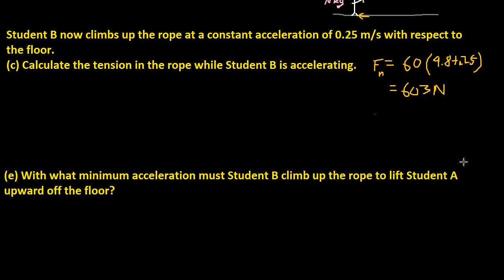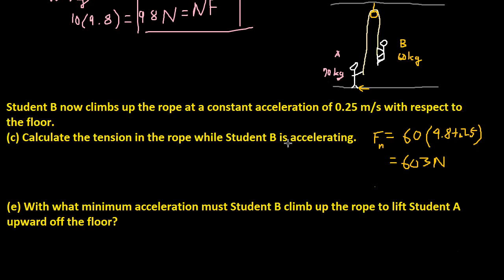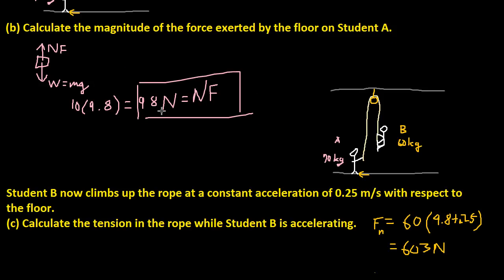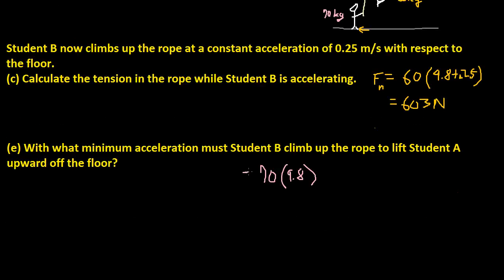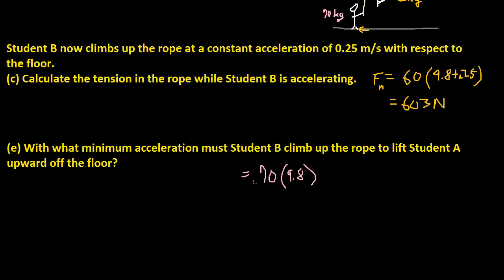For Part E: what is the minimum acceleration Student B must climb up the rope to lift Student A off the floor? In other words, how fast does Student B have to accelerate upward to match the weight of Student A? The weight of Student A on his own is 70 × 9.8 = 686 newtons.